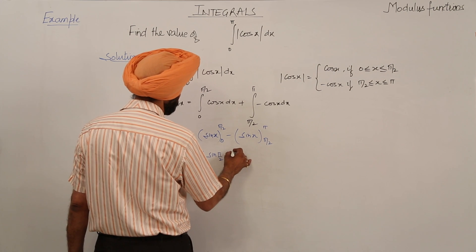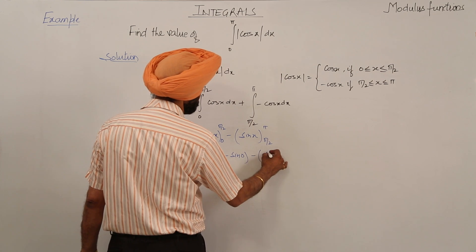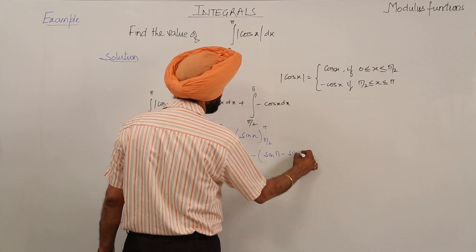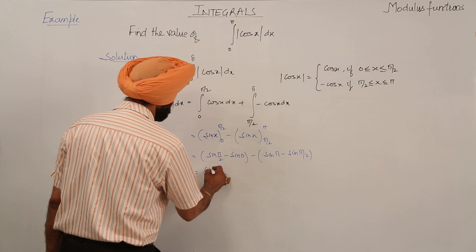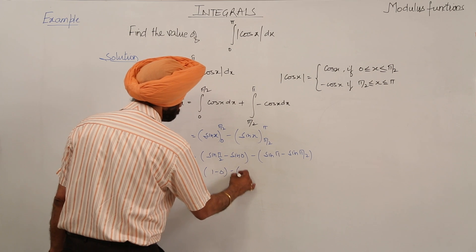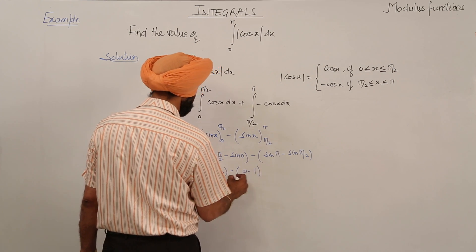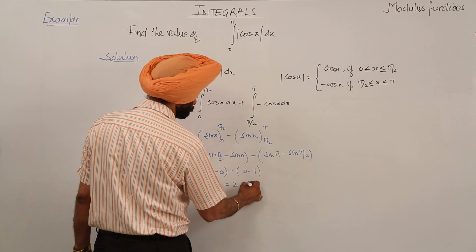That gives us sin pi by 2 minus sin 0, then minus sin pi minus sin pi by 2. Now evaluating these values: 1 minus 0 minus 0 minus 1, which equals 1 plus 1 is equal to 2. That's the answer.